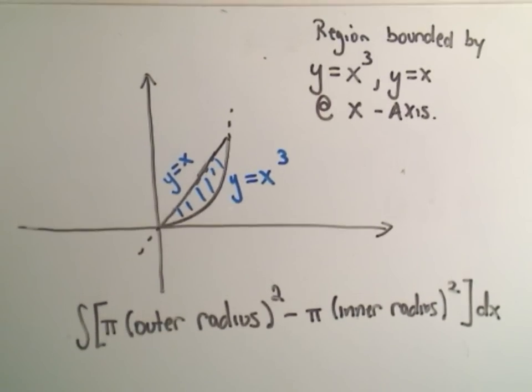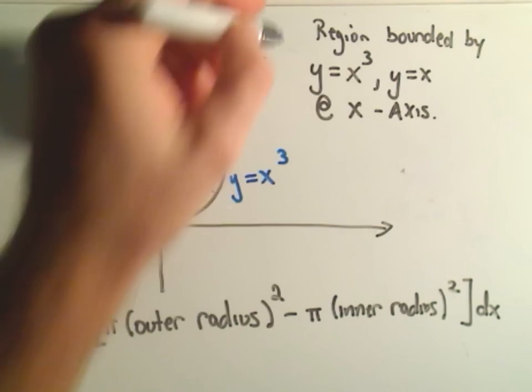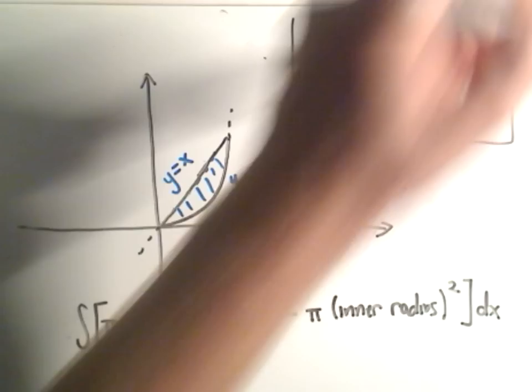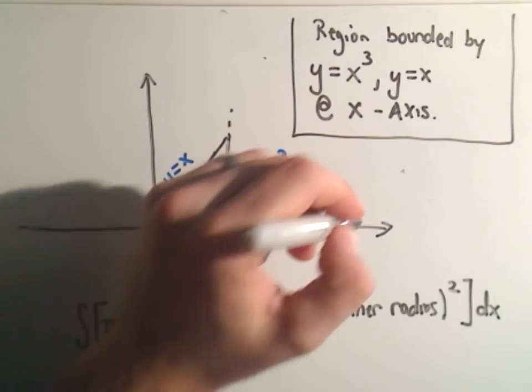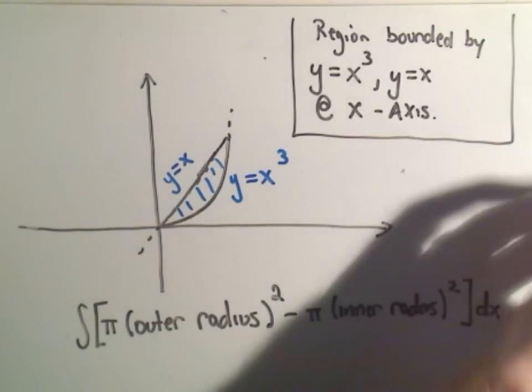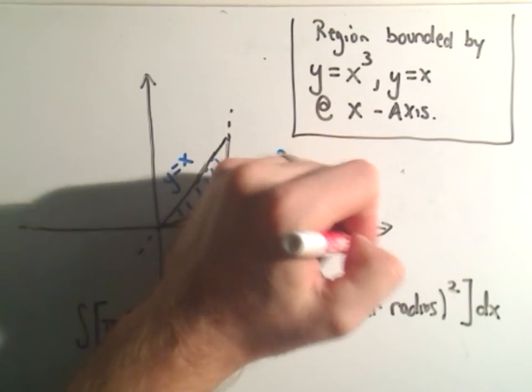So the problem we're going to do here, I've already got a little bit set up. We're going to do the region bounded by y equals x cubed, y equals x, and we're going to rotate that in this case just about the x-axis. So we'll go back to the good old x-axis here.